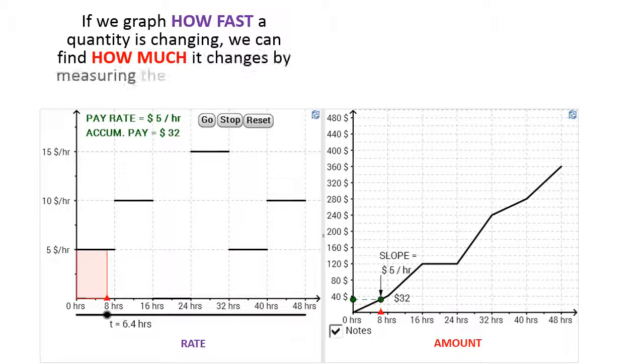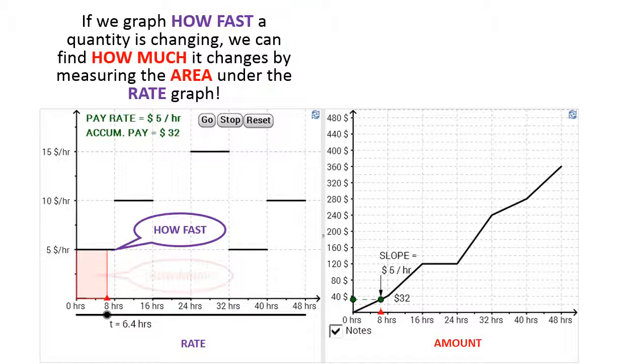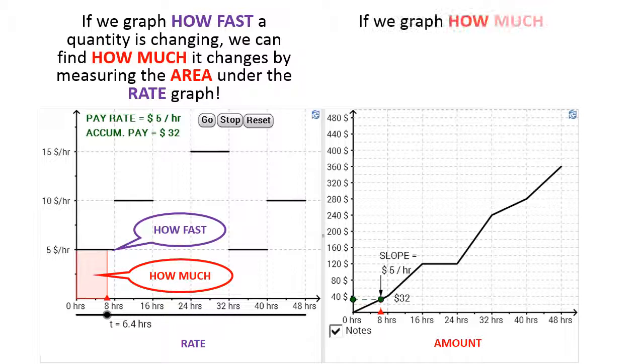So this means that if we graph how fast a quantity is changing, we can find out how much it changes by measuring the area under the rate graph. So in this case, how fast it's changing is $5 per hour, and how much it changes is the area, which is $32.